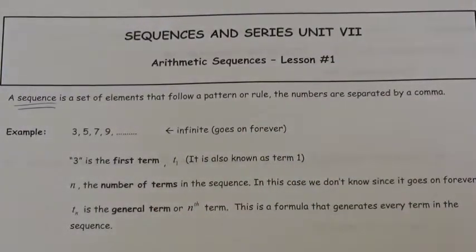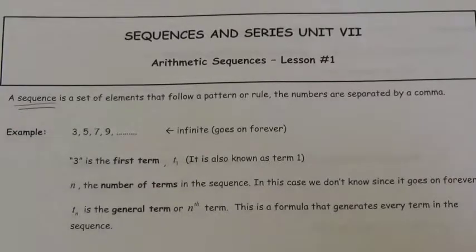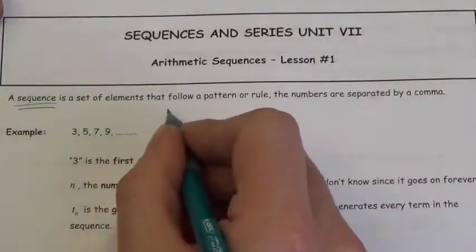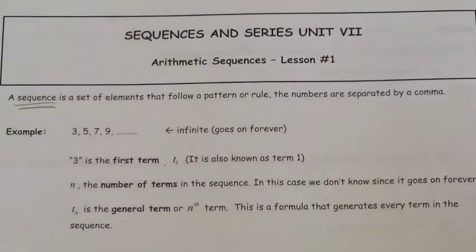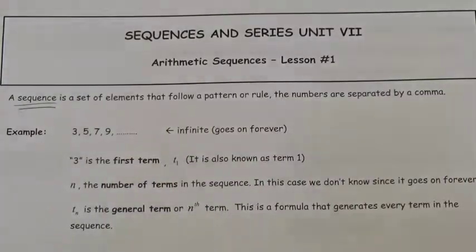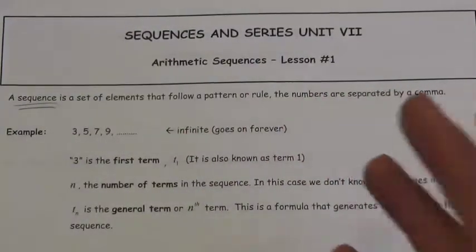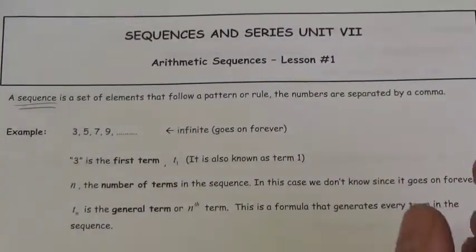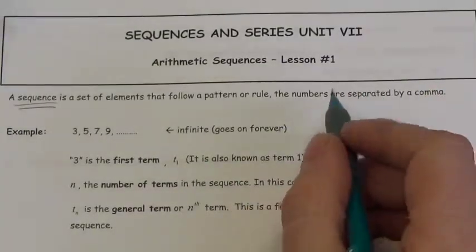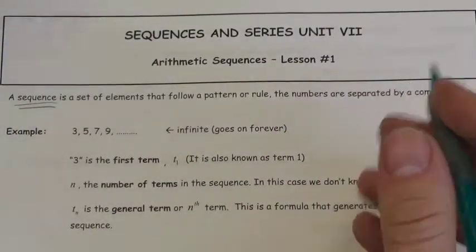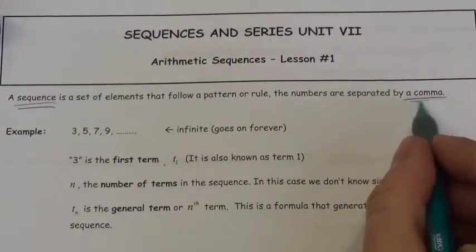They don't have to be number patterns though. It can be any kind of pattern — if you've got square, circle, square, circle, square, circle, that's a sequence. It's just a pattern of objects that follow a certain specified rule. We typically separate the terms or elements of the sequence by a comma.